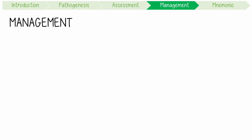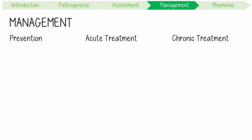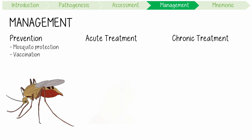Management can be divided into prevention, acute treatment, and chronic disease management. Prevention comes from mosquito protection and vaccination. Minimising mosquito exposure and using appropriate clothing protection and repellents is key in endemic areas. Although not ubiquitously available at the time of recording, a live attenuated Chikungunya virus vaccine was approved by the FDA in 2023 and is highly effective.